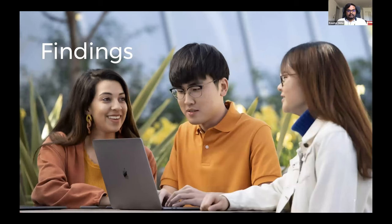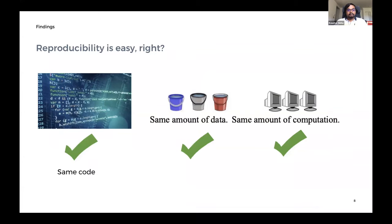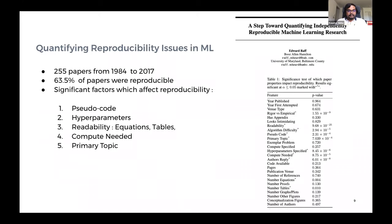Let's talk about certain findings in reproducibility in machine learning. Reproducibility should be easy, right? At least for us computer scientists — we have the same code, the same data, we might also have the same computation, and then you should get the same result. But that's not the case. Last year, in NeurIPS 2019, Edward Raff published a paper: 'A Step Toward Quantifying Independently Reproducible Machine Learning Research.' He tried to reproduce 255 papers published from 1984 to 2017, and found that 63.5% of papers were reproducible and the rest were not.